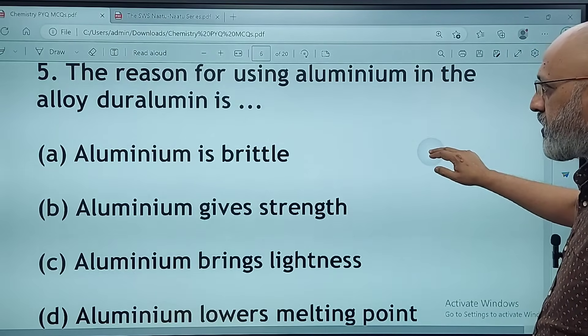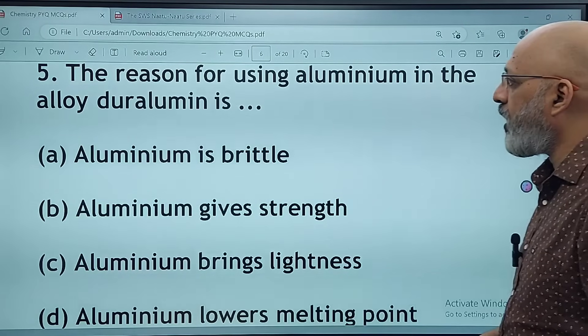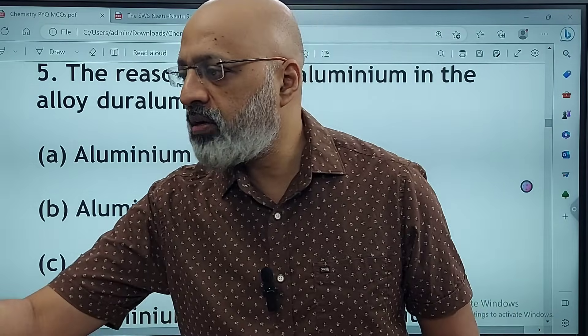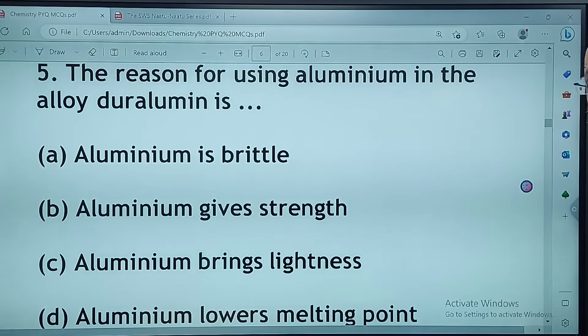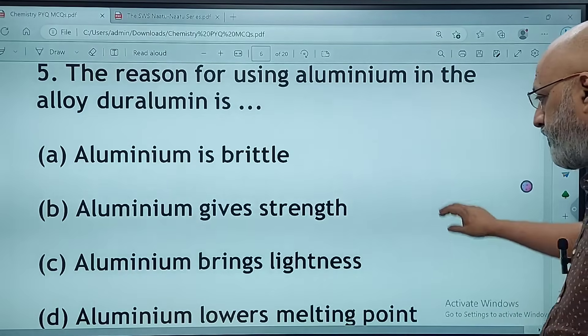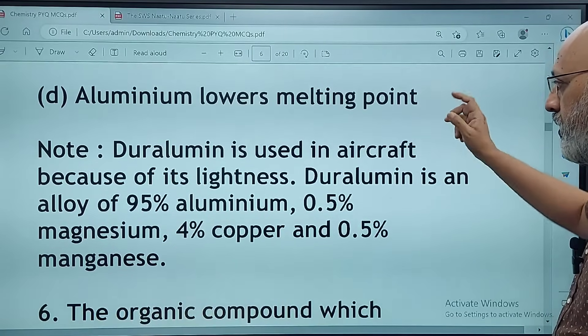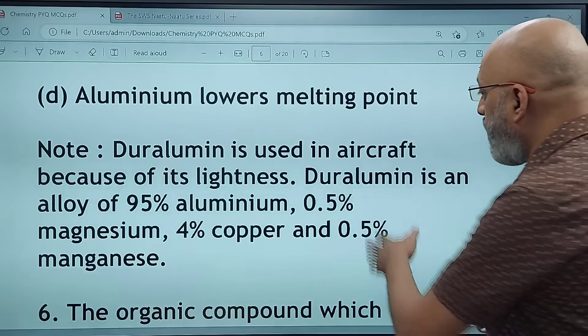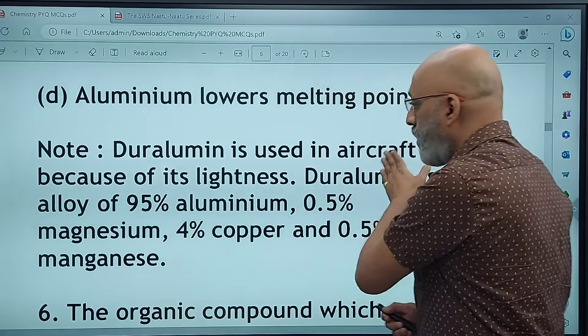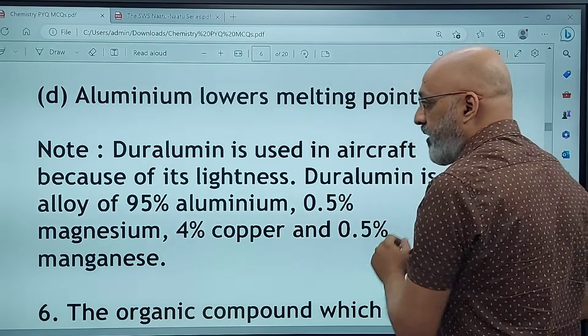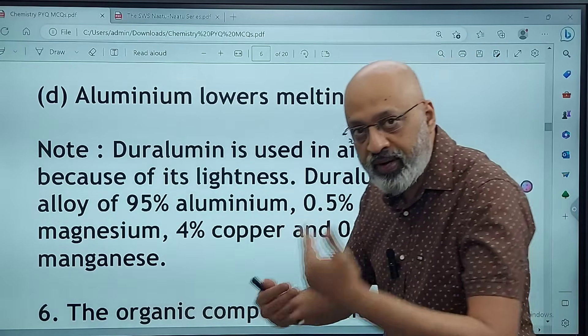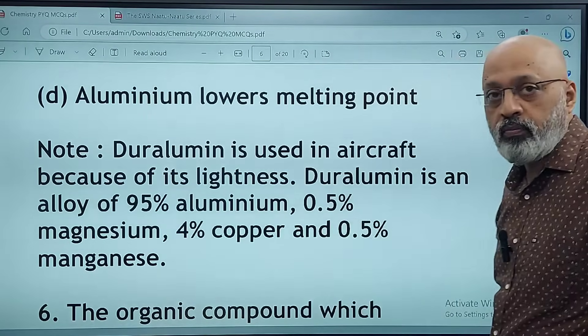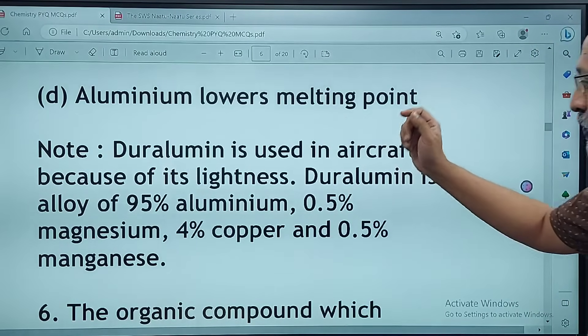The reason for using aluminum in the alloy duralumin is: aluminum is brittle, it gives strength, it brings lightness, or it lowers the melting point. The correct answer is C, that aluminum brings lightness. Duralumin is used in aircraft because of its lightness. It's an alloy of 95% aluminum, 0.5% magnesium, 4% copper, and 0.5% manganese.